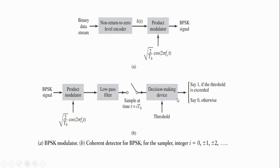The decision-making device determines whether the given signal is 1 or 0, depending upon the threshold value. If the output of the low-pass filter is higher than the threshold value, the decision-making device decides the value is equal to 1. If the output of the low-pass filter is less than the threshold value, the output of the decision-making device is 0.